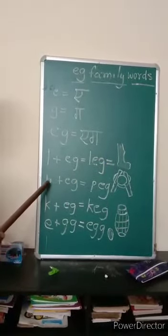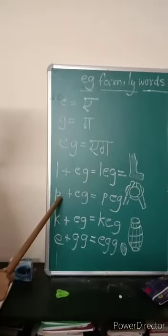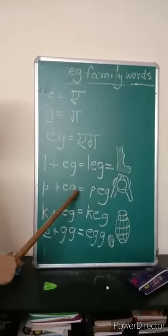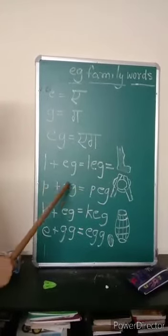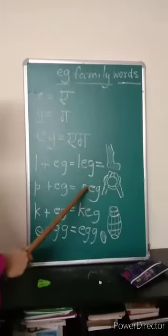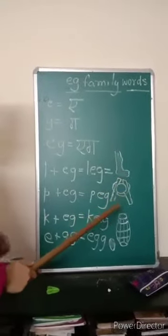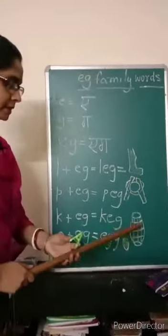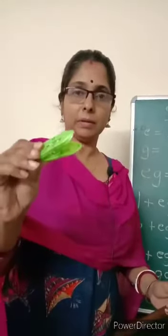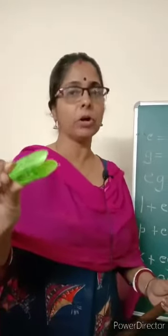Now children, again you see P. P says P and EG says egg. So P-egg, peg. P-E-G, peg. This is the picture of peg. This is peg. It is used to hang clothes for drying.